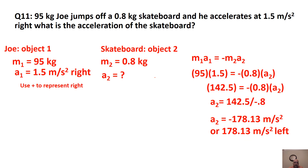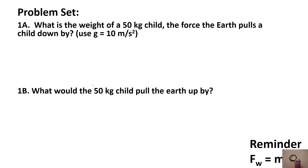If I ask you for magnitude, just leave off the direction. But if I ask for acceleration and you know the direction, include it — if the answer is negative, you can say 'backwards.' For the problem set, do all the problems before checking your work by watching me go through the answers.